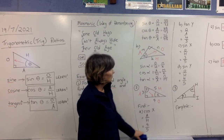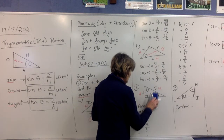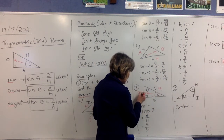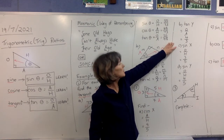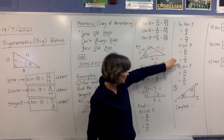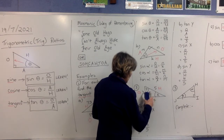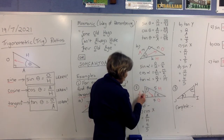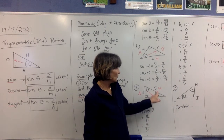Now we're finding sine X. We're back to angle X — opposite over hypotenuse — so it's 3 over 5. Then we're back to angle Y: this is the opposite side and that must be the adjacent. So sine Y, opposite over hypotenuse, is 4 over 5.